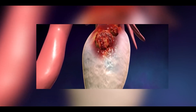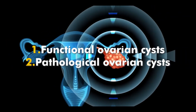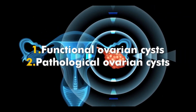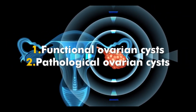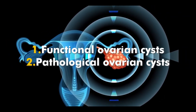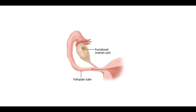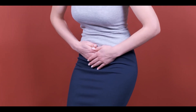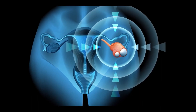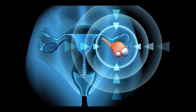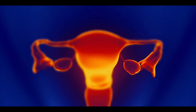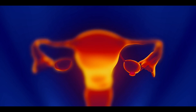Ovarian cysts are of two types: number one, functional ovarian cysts, and number two, pathological ovarian cysts. Functional ovarian cysts form during the menstrual cycle in females, and egg growth occurs in these cysts. Because these cysts play an important role in egg growth in female ovaries, they are called functional ovarian cysts.